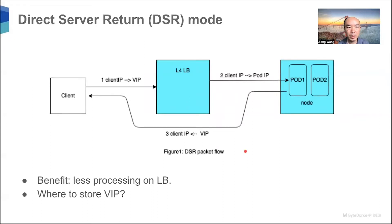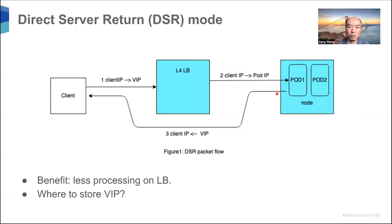Another mode is DSR mode, or Direct Server Return mode. In DSR mode, the client sends the packet to the VIP as before, but the load balancer does not change the source IP this time. It will just forward the packet to the pod with the pod IP. When the pod replies, it can use the client IP as the destination IP and send the reply directly to the client.